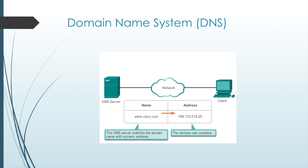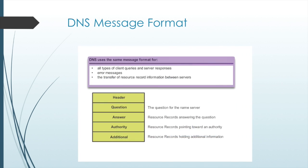In data networks, services are labeled with numeric IP addresses to send and receive data. Domain names were created to convert numeric addresses into recognizable names, such as cisco.com or netacad.com, which are much easier for people to remember. The Domain Name System was created for domain name to address resolution. DNS uses a distributed set of servers to resolve names associated with numeric addresses. The DNS protocol defines an automated service that matches resource names with the required numeric network address. DNS protocol communications use a single format called a message, used for all types of client queries and server responses, error messages, and transfer of resource record information between servers. A DNS server provides name resolution using BIND, or Berkeley Internet Name Domain.